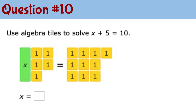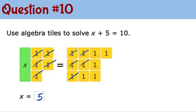Question number 10: in this diagram, can you think of tiles we can take out from both sides? We can take out the same quantity from both left and right. If I take out 3, I need to take out 3; if I take out 2, I also need to take out 2. So I took out 5 from the left and 5 from the right, ending up with x on the left side and 5 remaining on the right. So x equals 5.